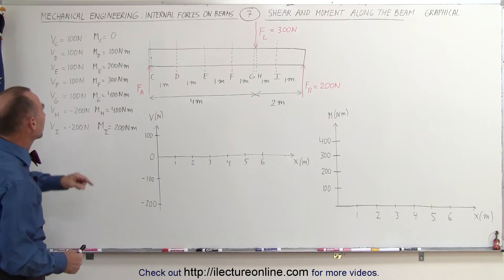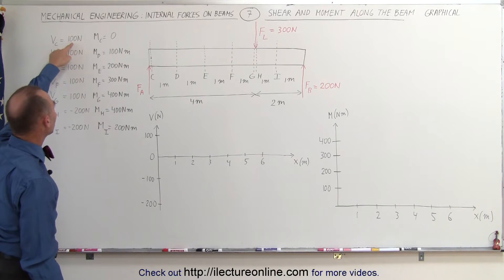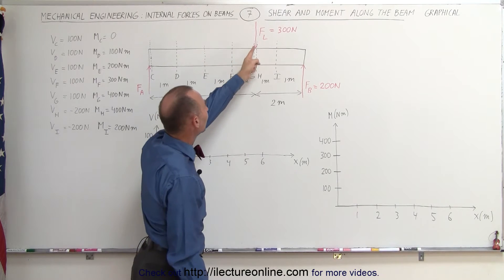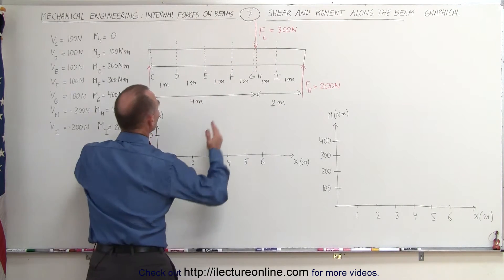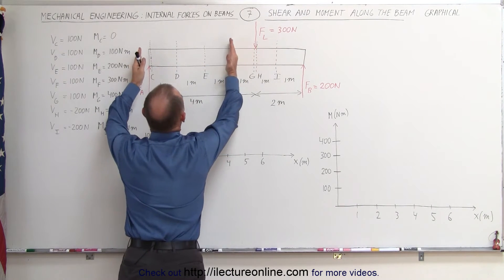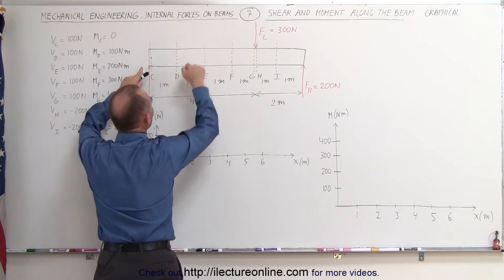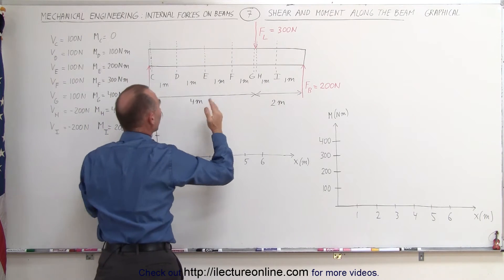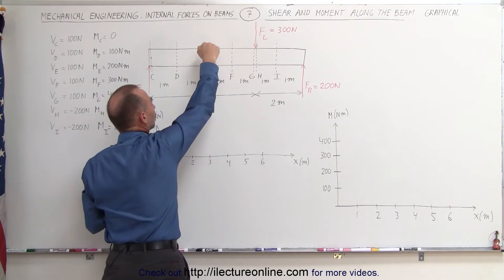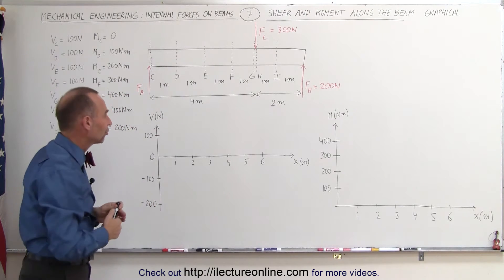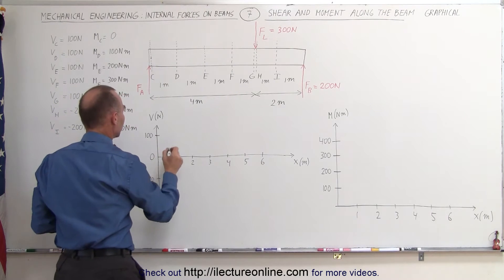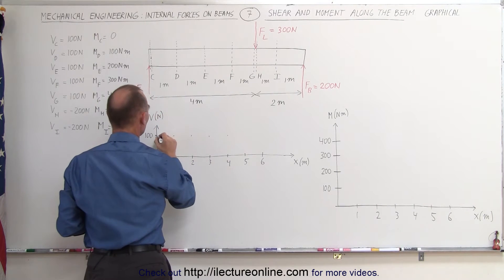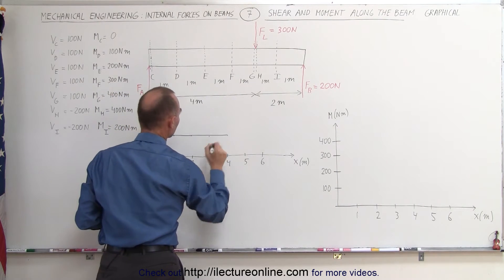First starting with the shear forces, we realized that they remained at 100 newtons all the way from C to D to E to F and to G, right before we got to the load force, because the only force acting on these sections right here would be the reaction force at A. So we had a shear force of 100 newtons in the other direction. Remember, for the left section, a shear force in the downward direction is considered a positive shear. So they remained at 100 at 1 meter, at 2 meters, at 3 meters, and at 4 meters, the shear force remained at 100 newtons.